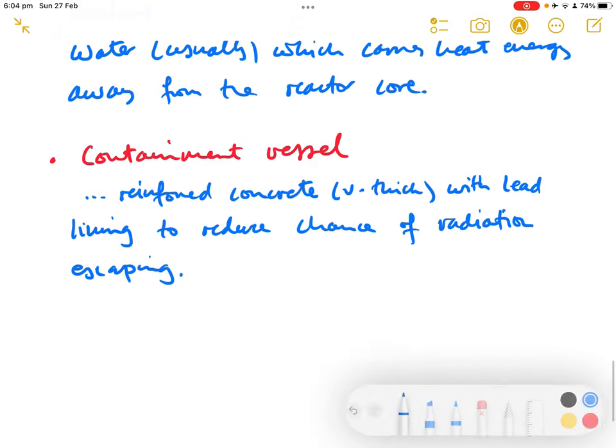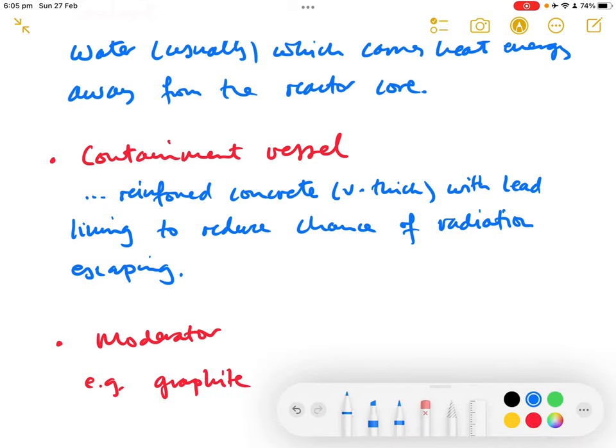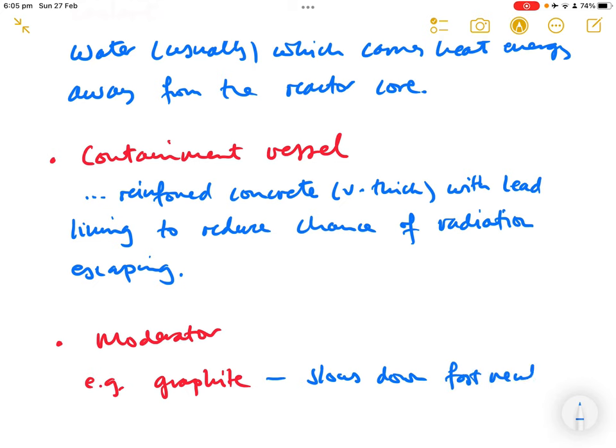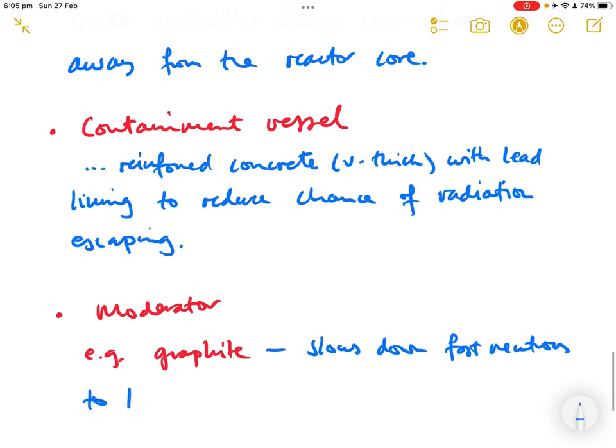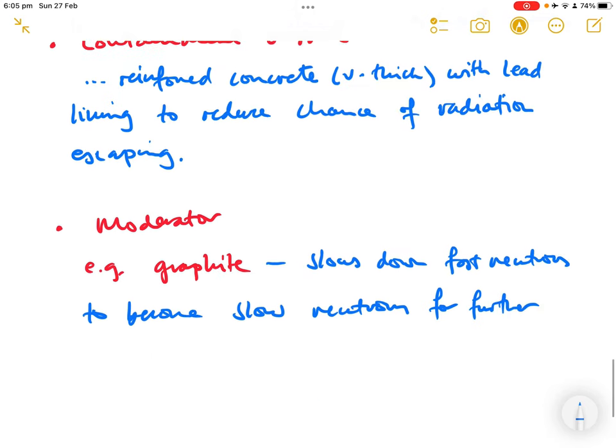I mentioned earlier that the neutrons produced in the fission reaction were travelling quite fast, but they can't be used to cause fission unless they're moving more slowly. So to do that you need something called a moderator. The moderator is often made of graphite, and basically its job is it slows down fast neutrons to become slow neutrons for further fissions in the chain reaction.